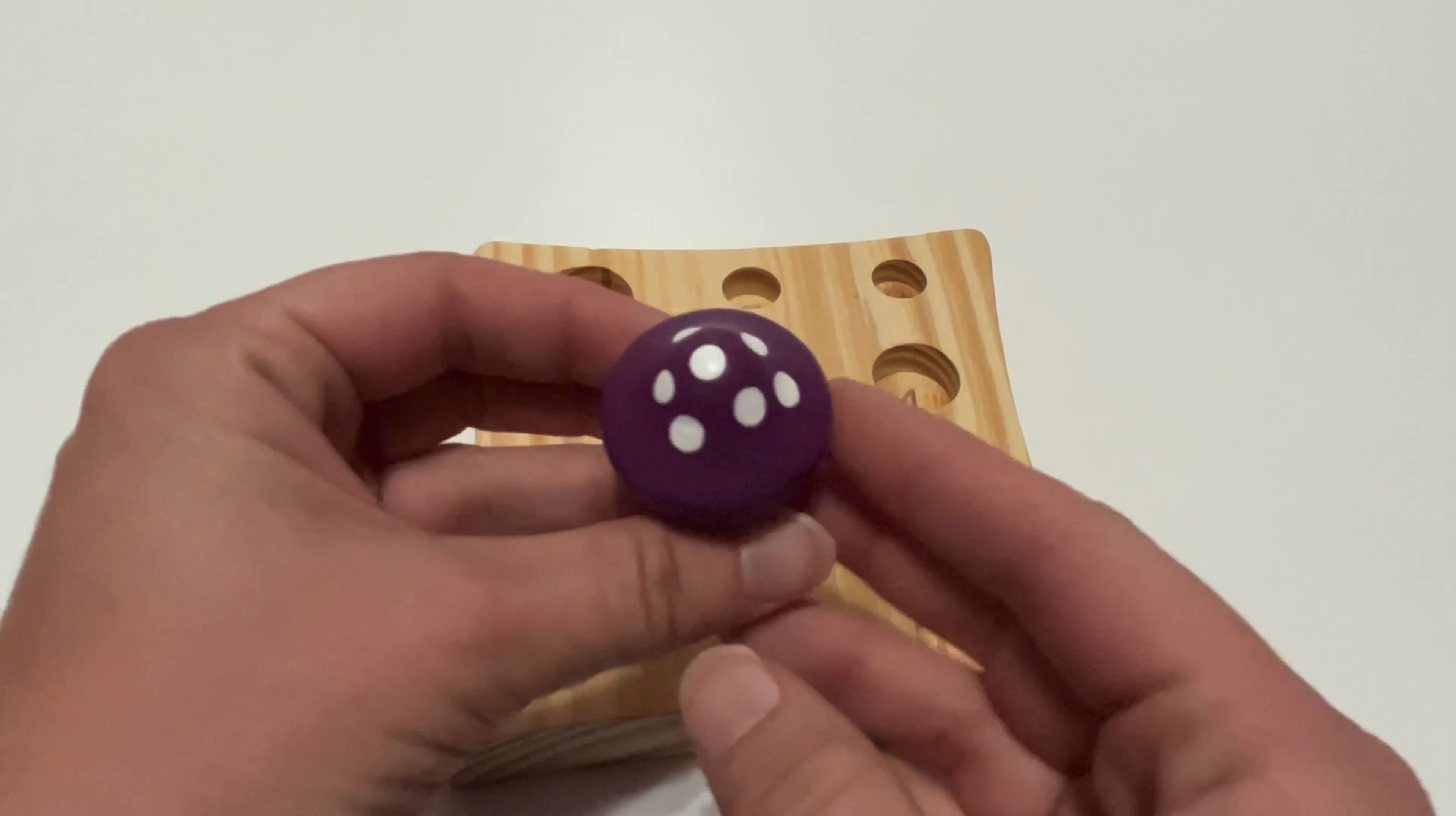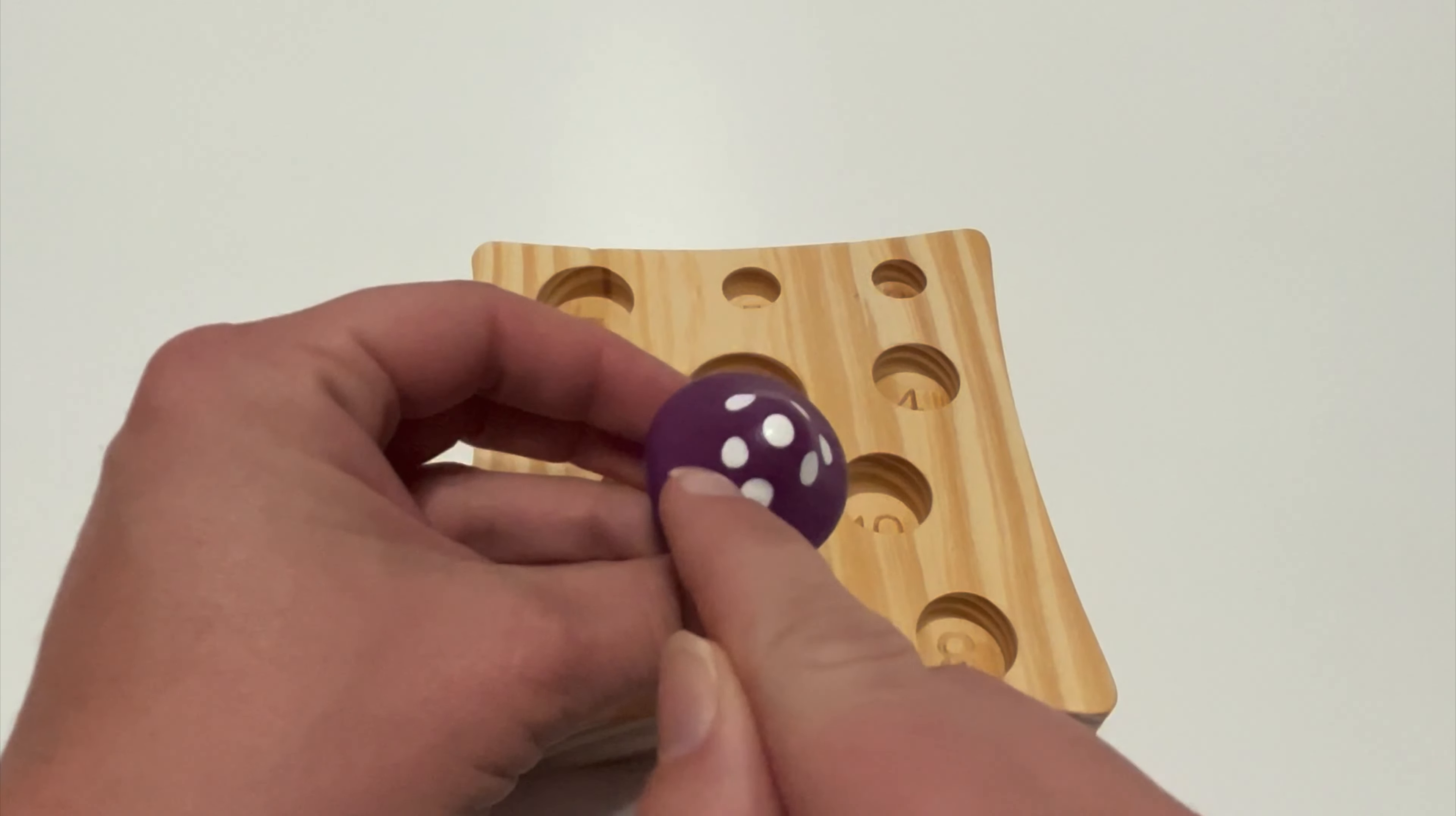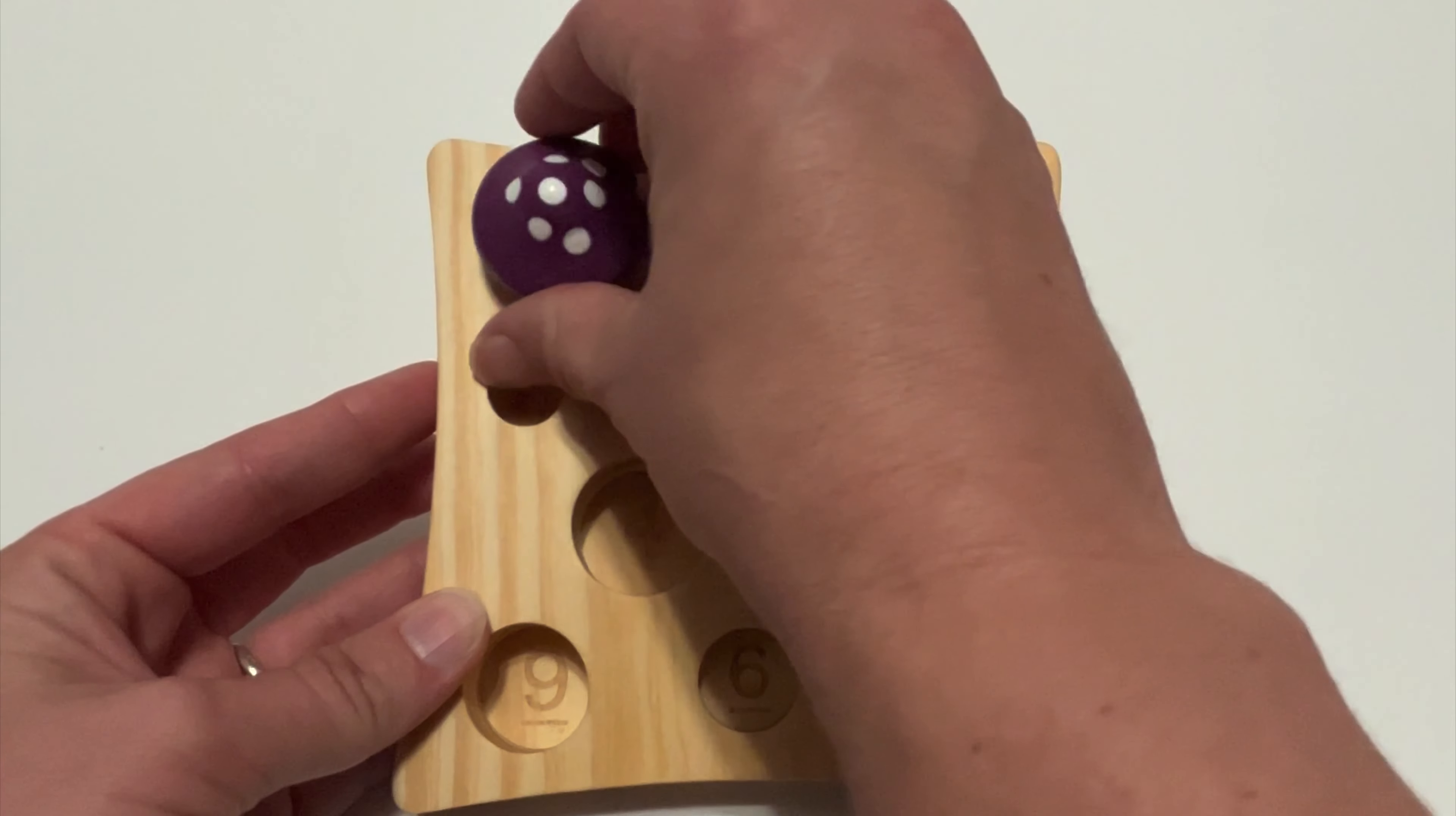Here we go. More white circles. How many? One, two, three, four, five, six, seven. Where is seven on our wooden block? Right again.